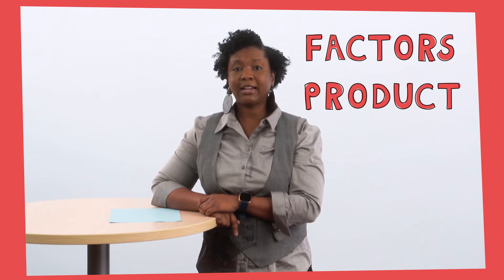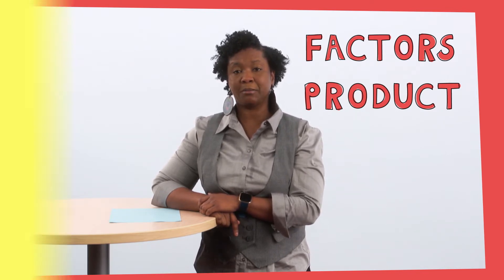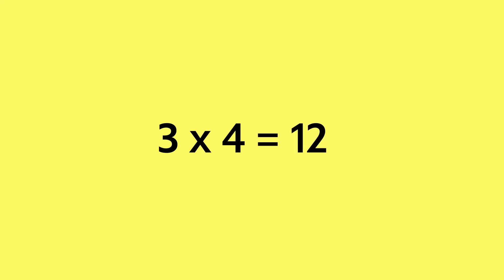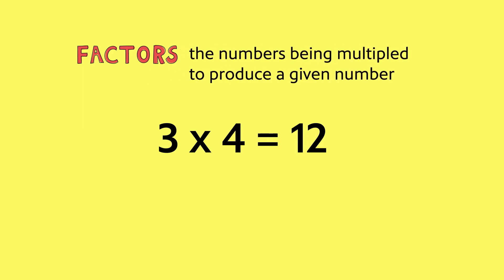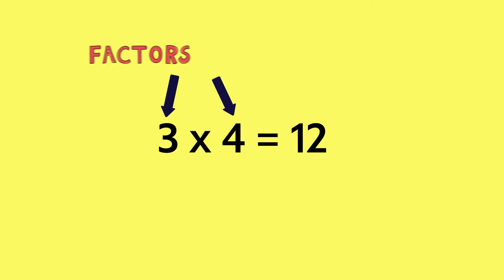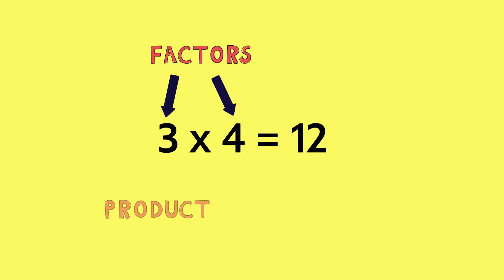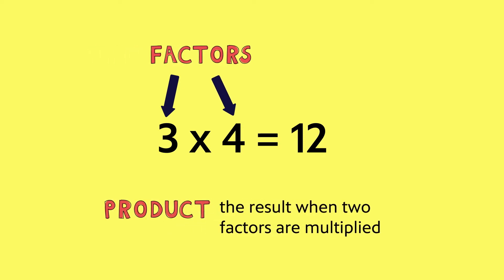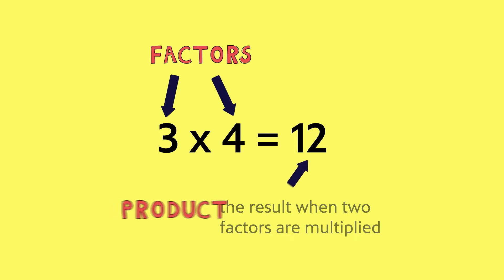Let's take a look at a multiplication problem: three times four. Factors are the numbers being multiplied to produce a given number. In this problem, three and four are the factors. The product is the result when two factors are multiplied. In this example, the product is 12.